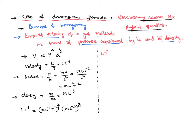LT^-1 equal to—here M^x is there, here M^y is there—here I can write M^(x+y). Here L^-1 is there times x, that means L^-x. Here L^-3y is there, and here T^-2x is there.